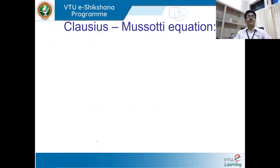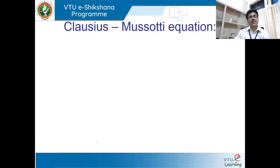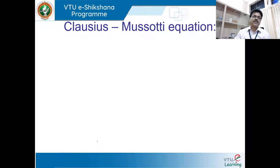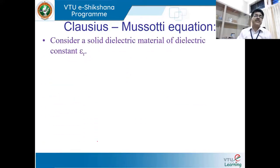Now let us look at the Clausius-Mossotti equation. Rudolf Clausius is a German physicist and Ottaviano Mossotti is an Italian physicist. These two scientists brought out a relation between electronic polarizability and the dielectric constant, represented as the Clausius-Mossotti equation. This is one of the important equations to derive, so let us derive it.